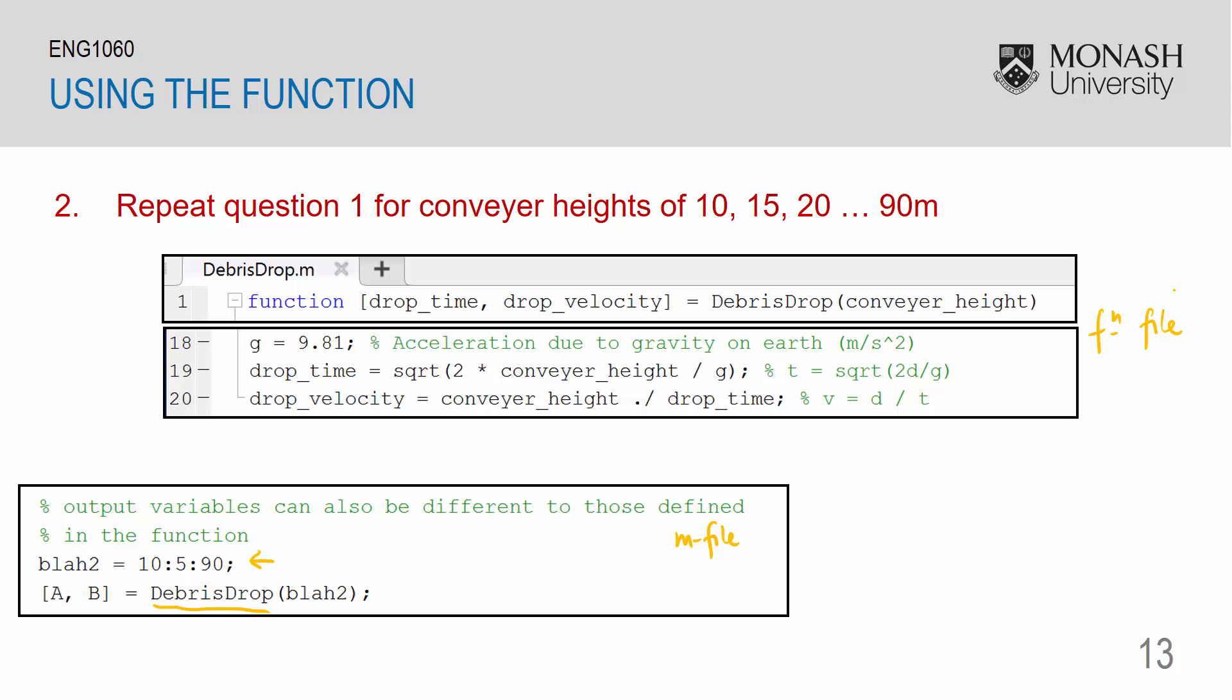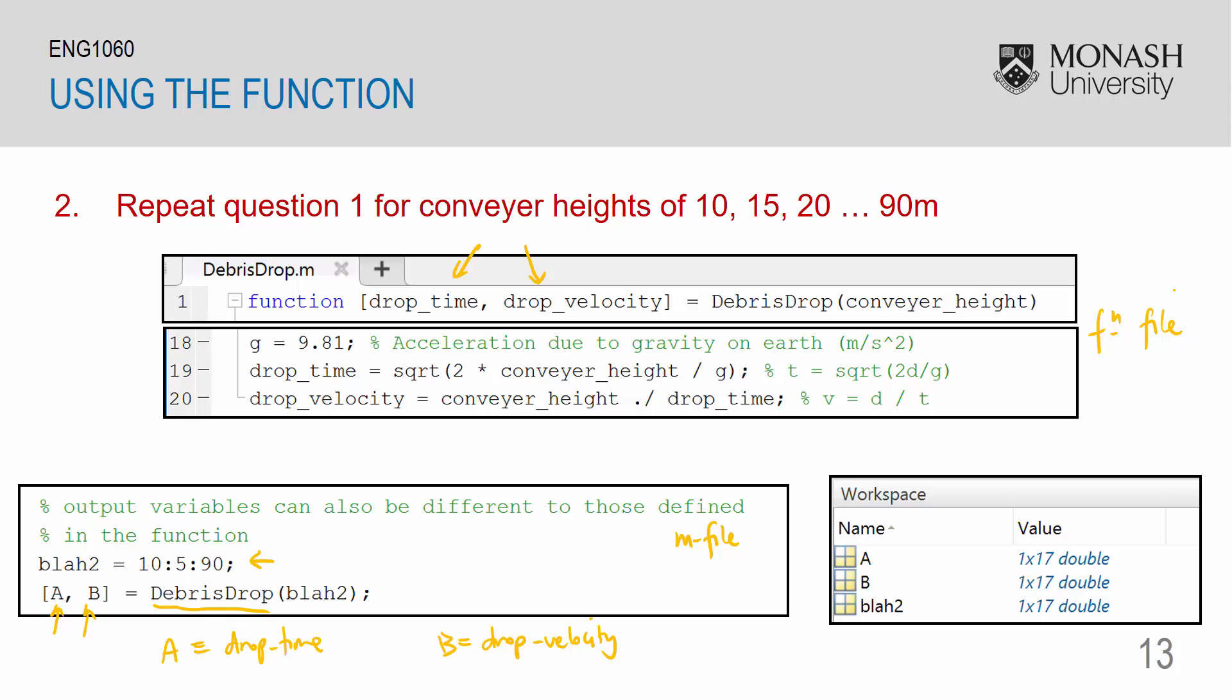Here I'm demonstrating that the output variable names does not need to match those within the function files. So in the function file, I've named it as drop_time and drop_velocity. However, in my m-file, I've named it as a and b. So a is actually representative of drop_time. And b is representative of drop_velocity. The following variables are created within the workspace. We have our a, which is drop_time, b, which is drop_velocity, and blah2, which are our conveyor heights.